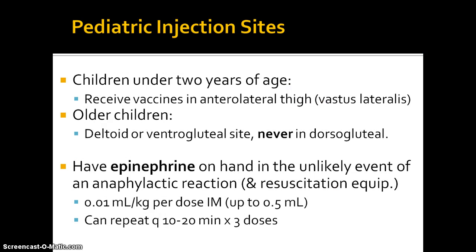A quick review of pediatric injection sites — you studied this material in first semester skills. Children under two years of age will receive their injections in the anterolateral thigh, the vastus lateralis, so you'll want to review how to find that site in a child. In older children we can use the deltoid muscle when it's large enough, or the ventral gluteal site, but never the dorsal gluteal. When we give vaccines, we need to have epinephrine on hand in case of an anaphylactic reaction, and resuscitation equipment. The epinephrine dose can be repeated up to three times while obtaining emergency help.